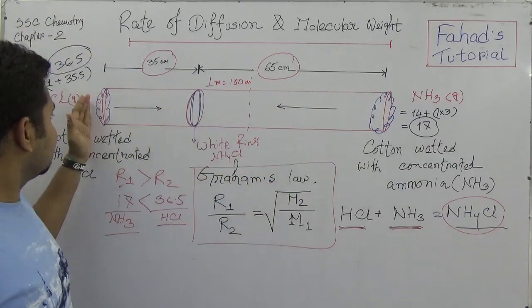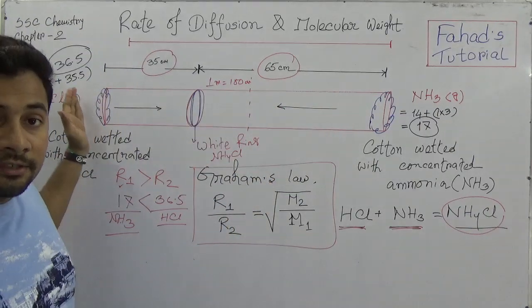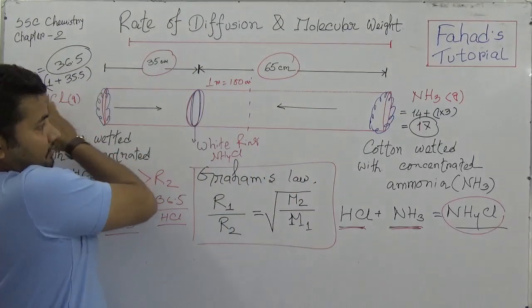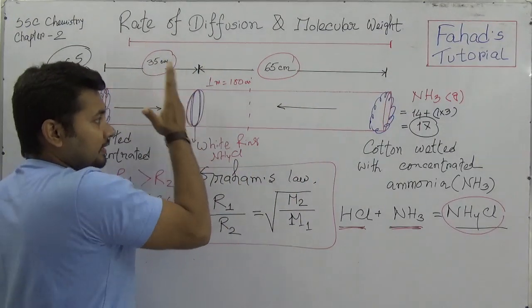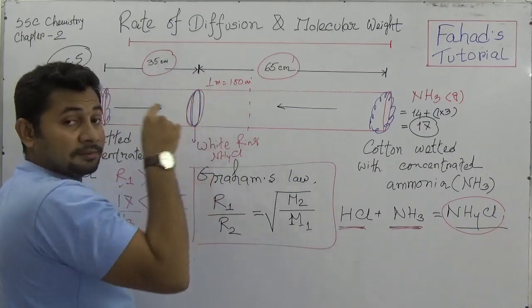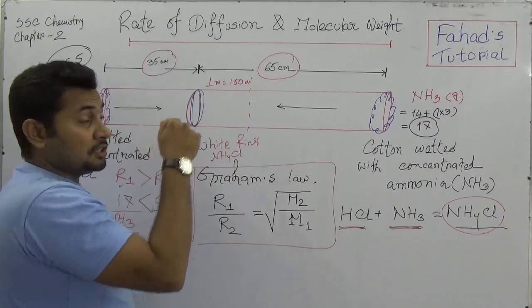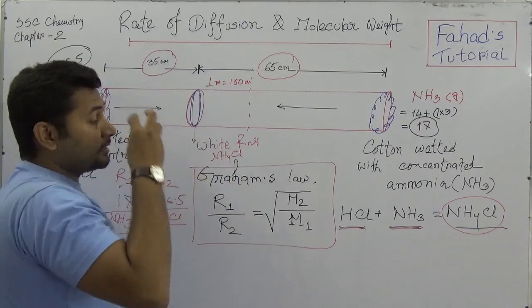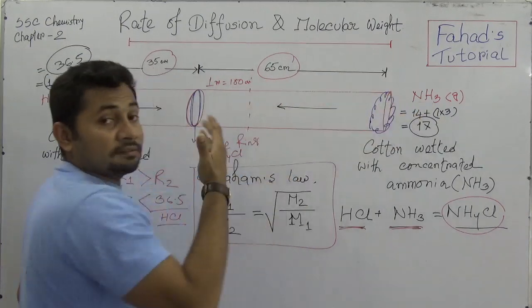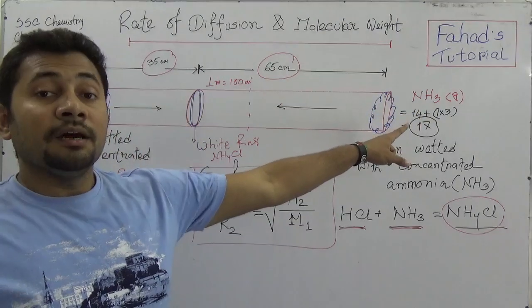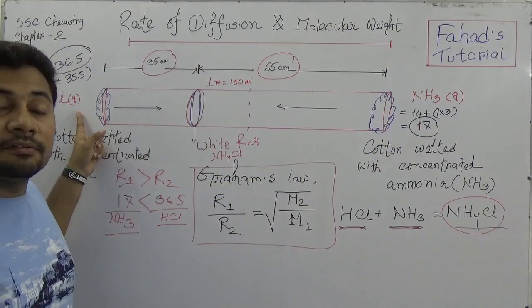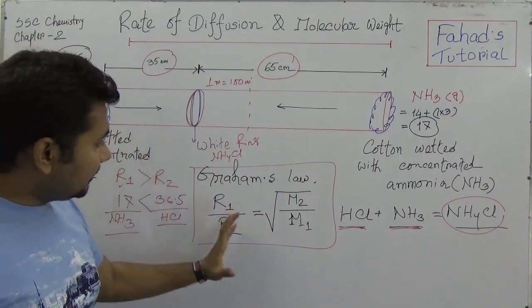This proves that the cotton soaked with ammonia diffused more, and the cotton soaked with hydrochloric acid diffused less. Ammonia crosses more pathway and HCl crosses less, and they produce the white ammonium chloride ring visible inside the tube.